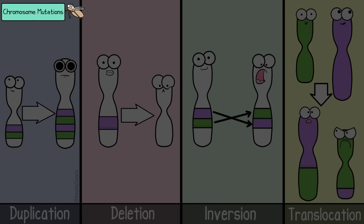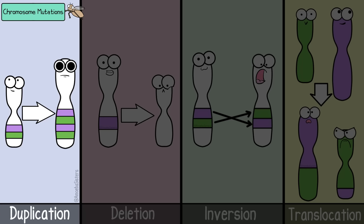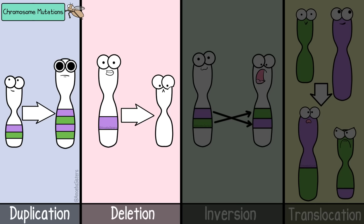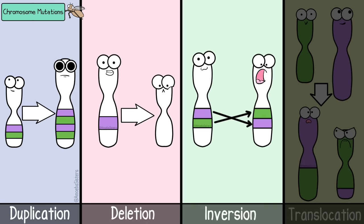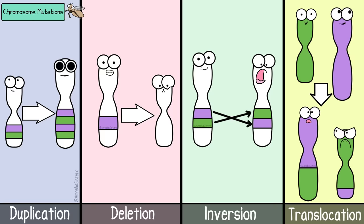Some examples of chromosomal mutations include duplication, where extra copies of genes are generated; deletion, where some of the genetic material breaks off; inversion, when a broken chromosome segment gets inversed — meaning reversed — and put back on the chromosome; or translocation, when a fragment from one chromosome breaks off and attaches to another chromosome.